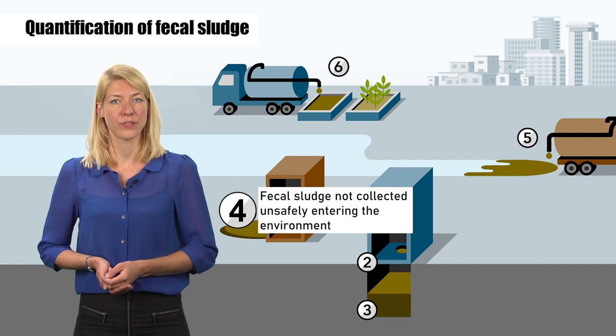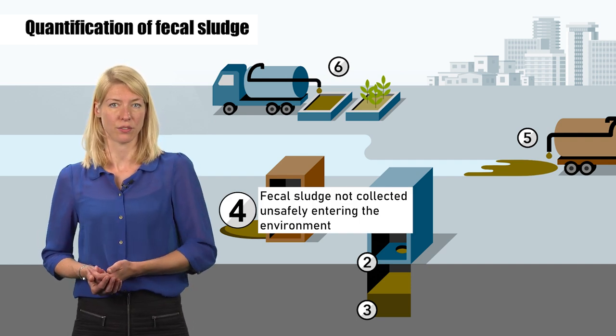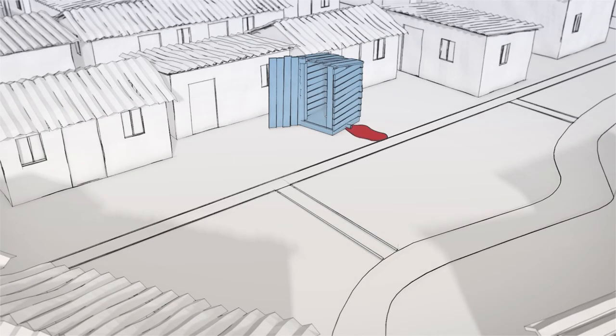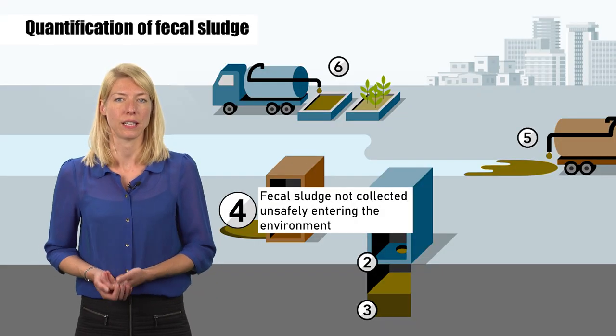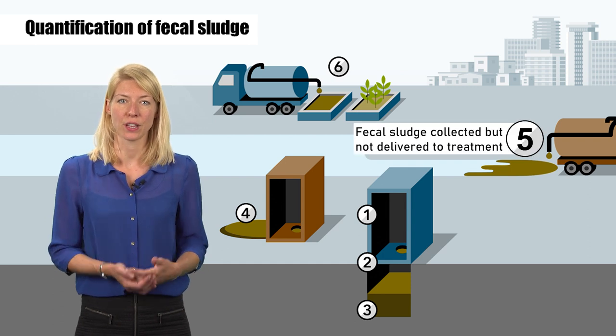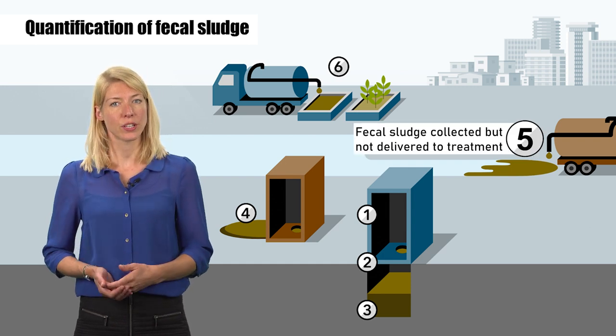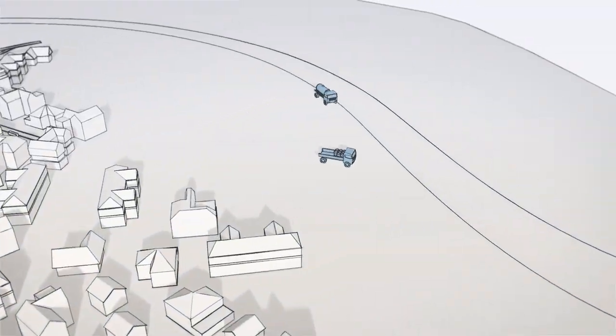Number four is fecal sludge that is not collected and is unsafely entering the environment. For example, what runs from an outlet into a storm drain, or when people break a containment and let it drain out directly into the environment. Number five is fecal sludge that is collected, but not delivered to treatment. For example, because there is no suitable place for discharge available.